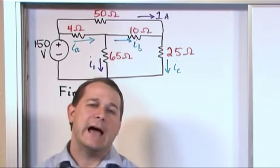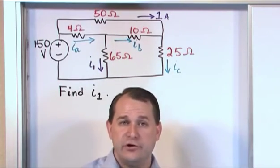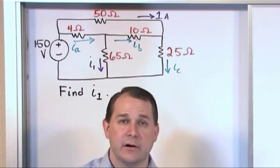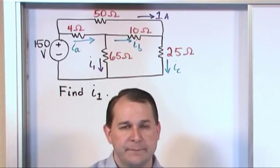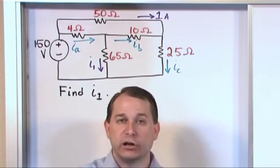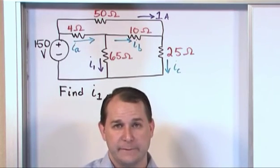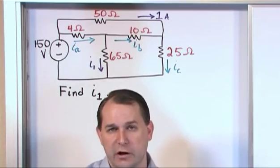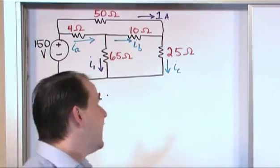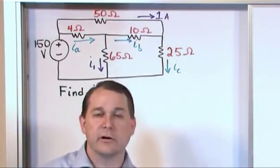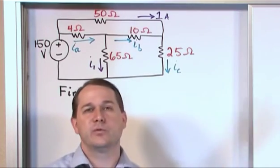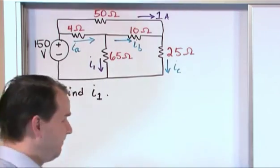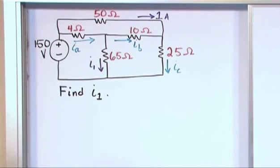The rule of thumb is: however many nodes you have in the circuit, you can write one minus that number of Kirchhoff current law equations. And however many loops you have in the circuit, you can write one minus that number of Kirchhoff voltage law equations. So it's very easy to remember.